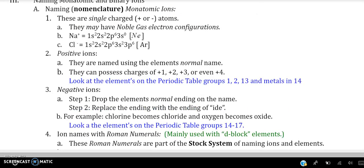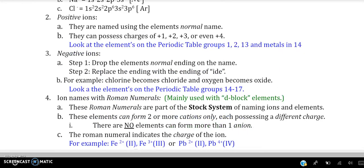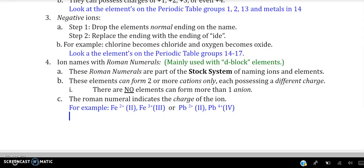Positive ions are named by their normal element name, and those are commonly found on periodic table in groups 1, 2, 13, and metals in column 14. Negative ions and anions drop the normal ending of their last name, and the suffix of i-d-e is replaced. Look for these elements on the periodic table in groups 14 through 17. For example, chlorine becomes chloride and oxygen becomes oxide.